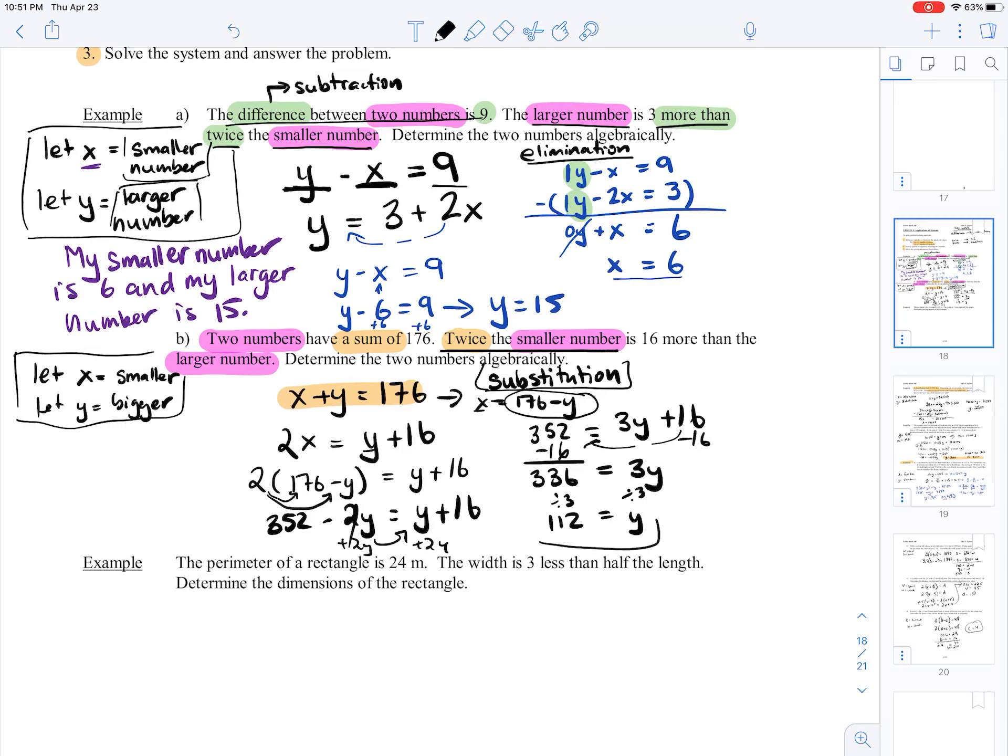Now that I've got an answer for y, I can just substitute it back in to one of our original equations. So I'm going to say x plus y equals 176 was one of our equations. I'm going to substitute in 112 for y. So x equals 176 minus 112, that's 64.